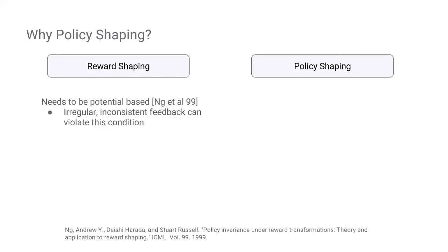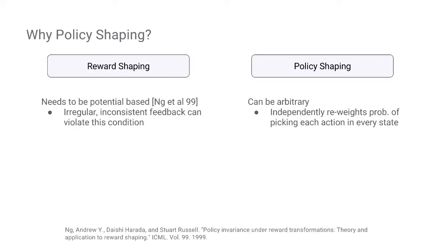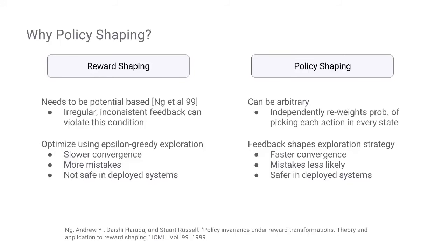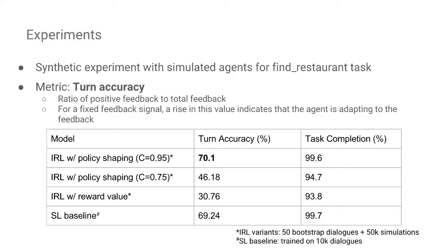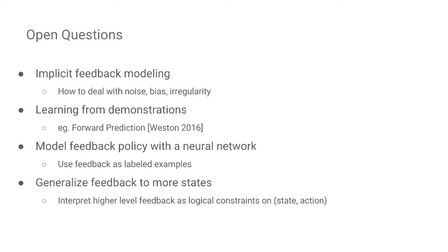There are a couple of reasons why this is better: the feedback policy can be arbitrary and doesn't need to be potential-based, and it also shapes the exploration strategy, making it faster to converge and safer in deployed systems. Skipping over the experiments — happy to talk offline — there are open questions about how to model implicit feedback, how to learn from demonstrations, and whether we can model the feedback policy as a neural network when incorporating many feedback labels.